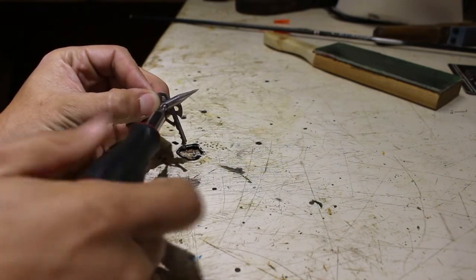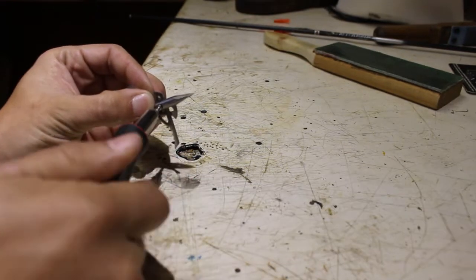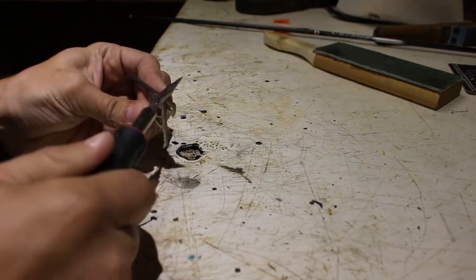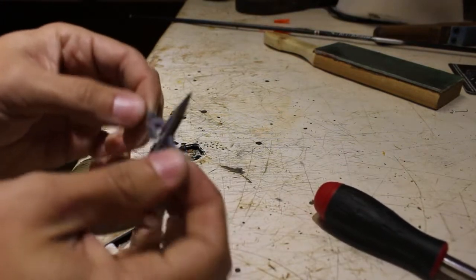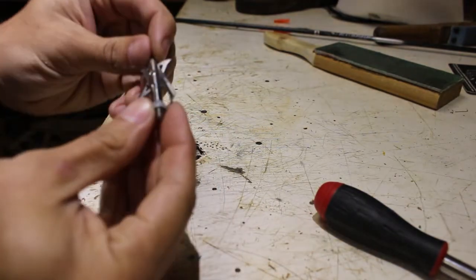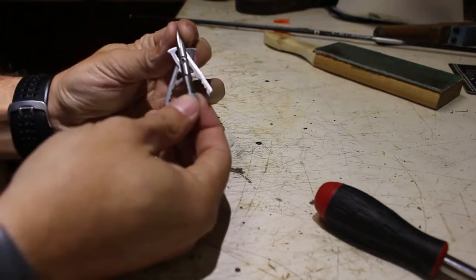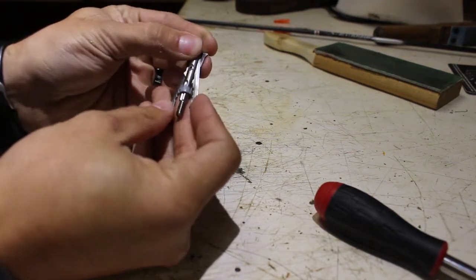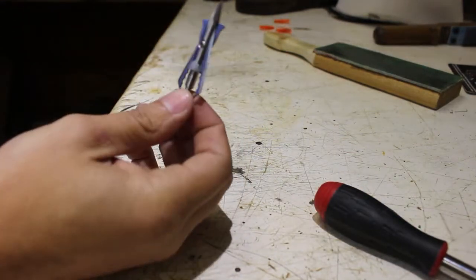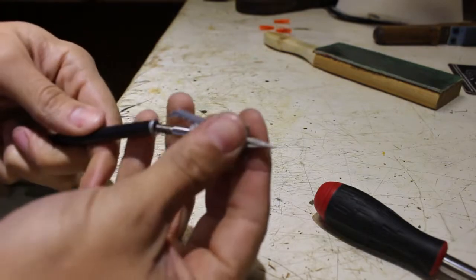Make sure you don't cross-thread anything. Snug it up pretty good, because you're going to be flinging this through animals. Make sure that these are still moving free. Put your shock collar back on. And you're done. So guys, that is how I sharpen my Rage Tri-Pans.